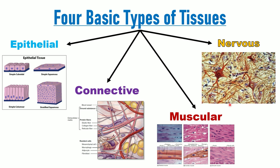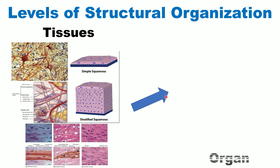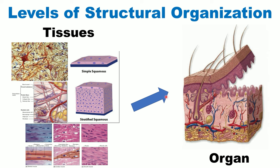Last but not least, we have nervous tissue. Nervous tissue is composed of several types of cells, but the most important are the neurons — the cells responsible for communication between all parts of the human body and between people. Several tissues will give us an organ, such as the skin, which is the biggest organ of the human body. This takes us from level six to level seven of structural organization.